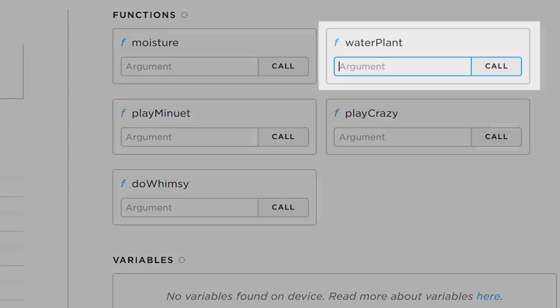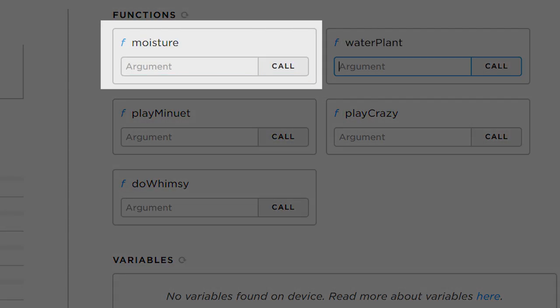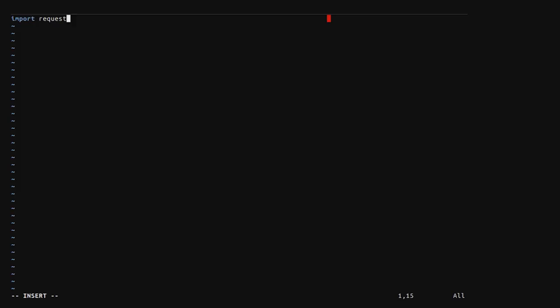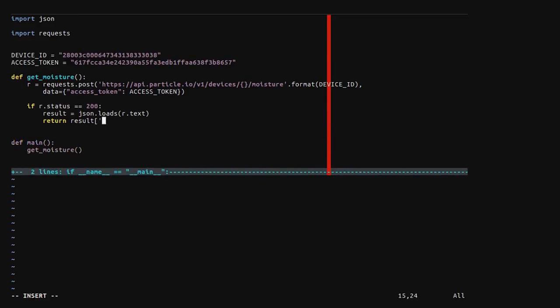We're going to define two functions, one function to run the pump for five seconds and another to measure the current soil moisture. The function can return an integer, which is perfect for our use case. You do have to make sure your function doesn't take too long, otherwise the API caller will get a timeout error.